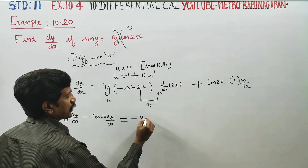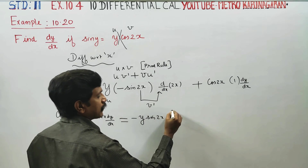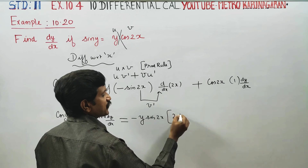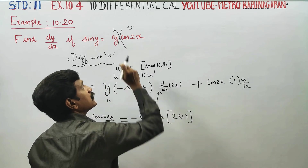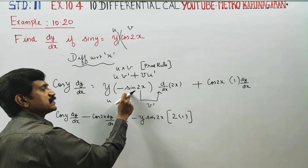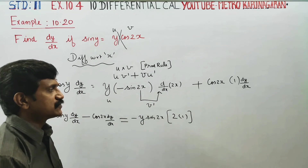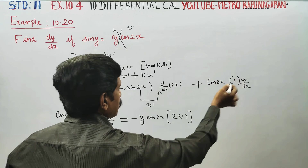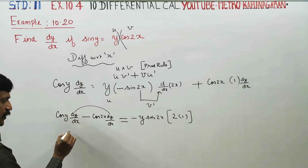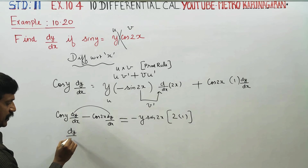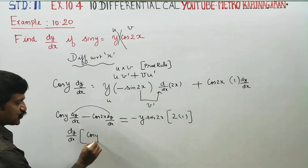After applying the chain rule, differentiating cos 2x gives minus sin 2x times 2. At the next stage, take dy by dx common. dy by dx common gives cos y on the left side.